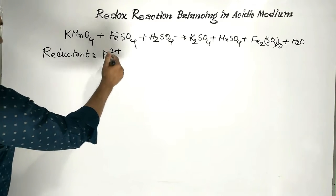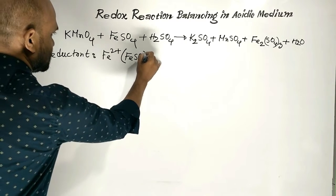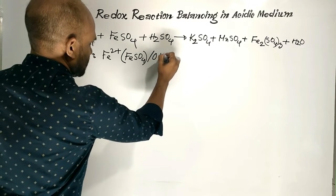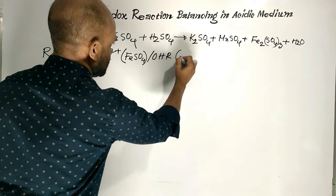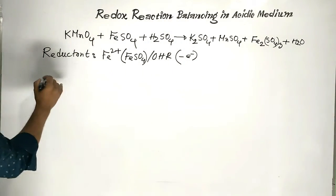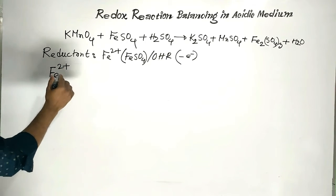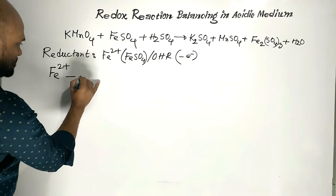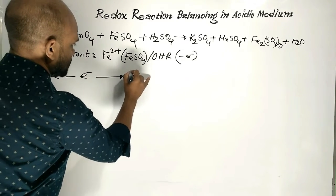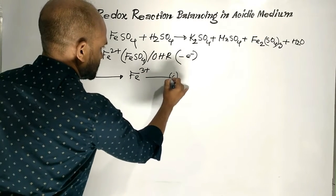The Fe²⁺ ion of Ferrous Sulphate causes the oxidation half-reaction through release of electrons in this way: the Ferrous Ion, releasing one electron, turns into the Ferric Ion. Suppose this is equation number one.